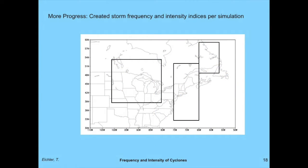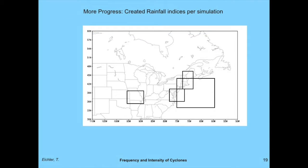For more progress, I've created storm frequency and intensity indices — not yet fully analyzed, but developed for each simulation. I looked at a Great Lakes Midwest storm area, an area on the East Coast, and an area further out off the Maritimes. For rainfall indices, I looked at four areas: three for the East Coast and one for the Midwestern section I'll show in a moment.